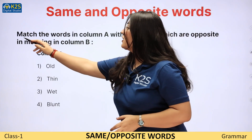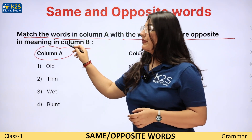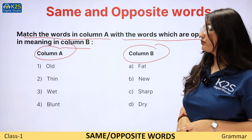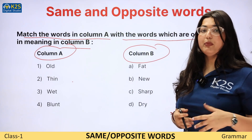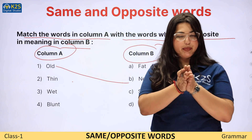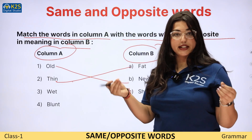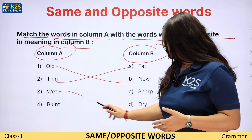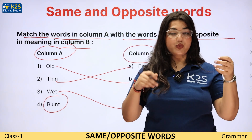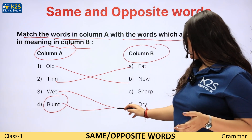Now let's do this question: Match the words in column A with the words which are opposite in meaning in column B. Old — what is the opposite? New. Thin — opposite? Fat. Wet — something ghila, just like wet clothes. What is the opposite? Dry. Blunt — just like a knife whose cutting portion is not very sharp. So blunt ka opposite kya ho jaega? Sharp.